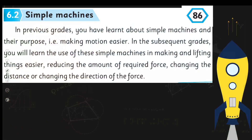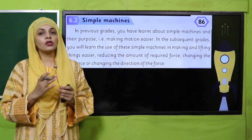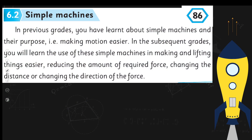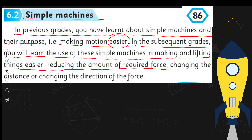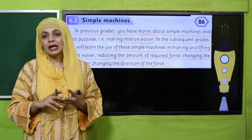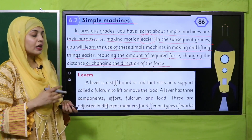For reading, please open page number 86 in your Science 4 books. Put your fingers where I will read. 'Simple Machines: In previous grades you have learned about simple machines and their purpose — making motion easier — in other words, making our movement tasks easier. In the subsequent grades, you will learn the uses of these simple machines in making and lifting things easier, reducing the amount of required force, changing the distance, or changing the direction of the force.'